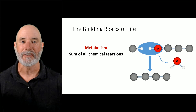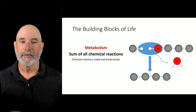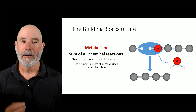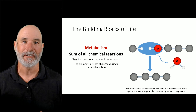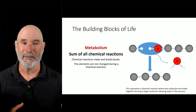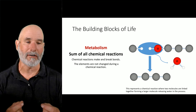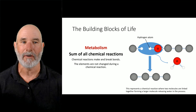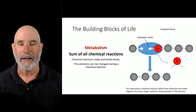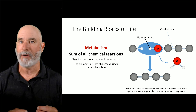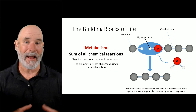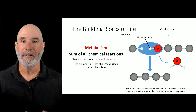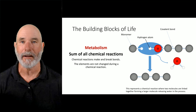Metabolism is the sum of all these chemical reactions, like the one shown on the right — that's a condensation reaction we'll get to in a second. Basically, I'm taking two smaller molecules and combining them into a larger molecule. That little white part would be a hydrogen atom attached to oxygen. The little lines represent a covalent bond, which is formed by sharing valence electrons. That's our monomer there, which could be as small as a carbon atom, or something like an amino acid, nucleic acid, or glucose molecule.